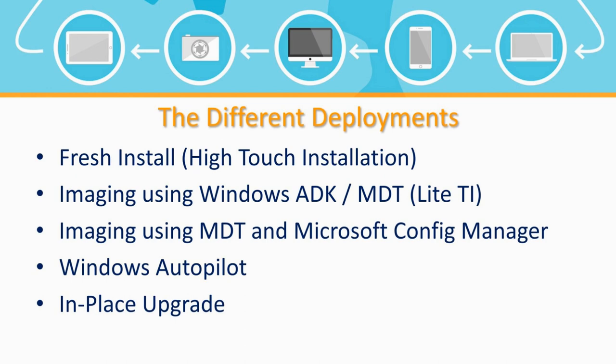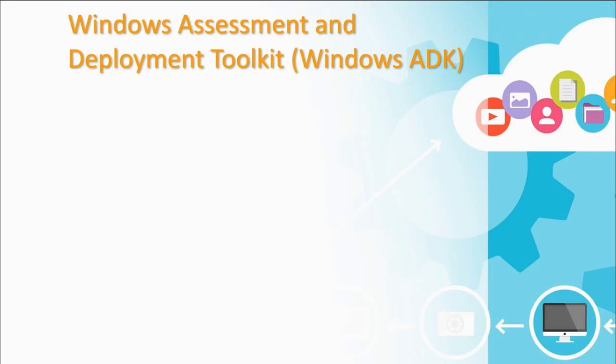Then you have an in-place upgrade — a simple idea where you upgrade from an older version of Windows to a newer one. The advantage is that you don't have to reinstall any software; it carries over. The downside is that if your old OS had corrupted software or problems, those can carry over into the new version as well, potentially bringing old issues into the new operating system.